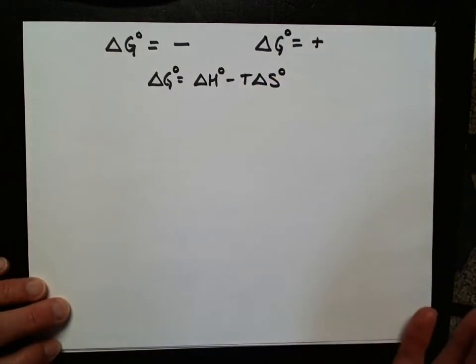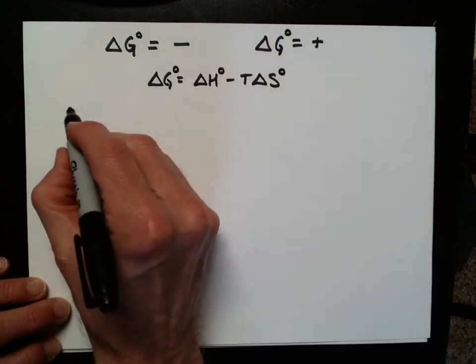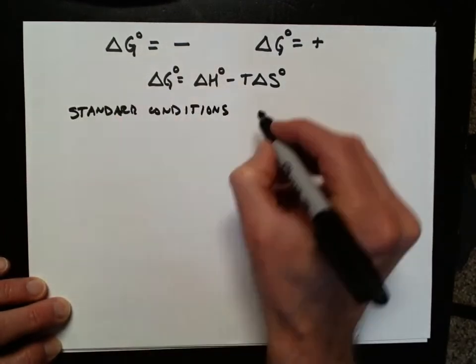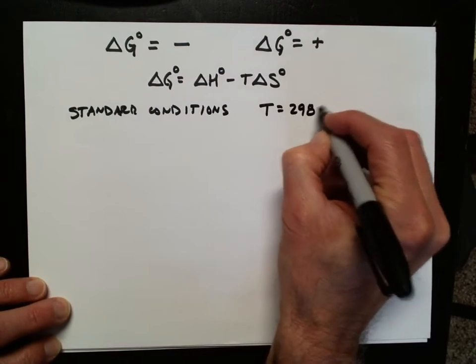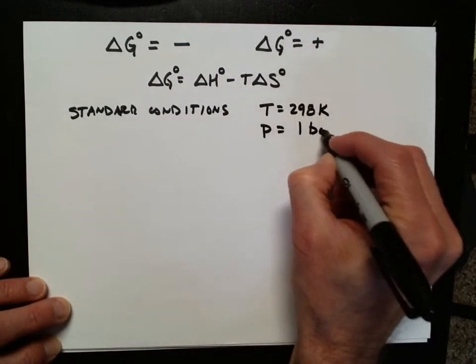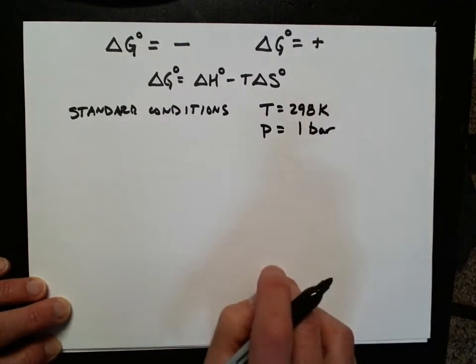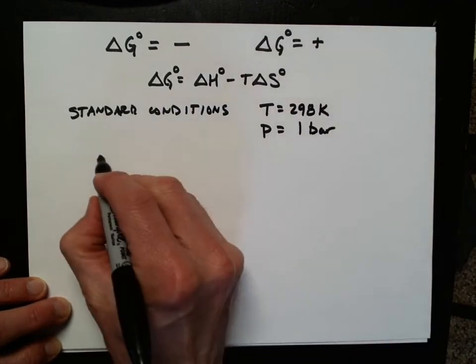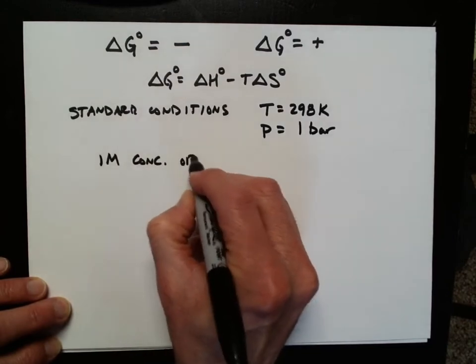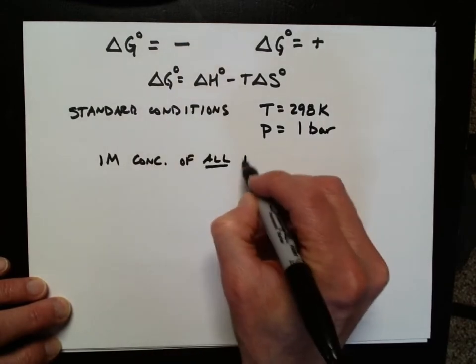What are standard conditions? Standard conditions are 298 Kelvin temperature and a pressure of one bar, which is pretty close to one atmosphere. And it's also one molar concentration of all reactants and products.